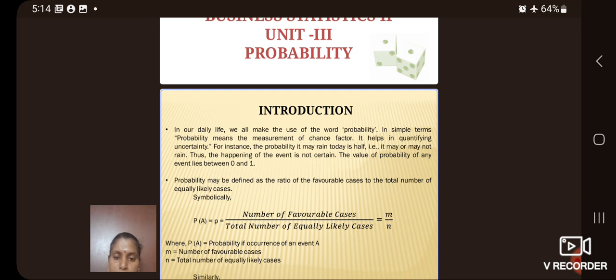Introduction. In our daily life, we all make use of probability. In simple terms, probability means the measurement of the chance factor. It helps in quantifying uncertainty. For example, the probability it may rain today is half. That is, it may or may not rain. Thus, the happening of the event is not certain.